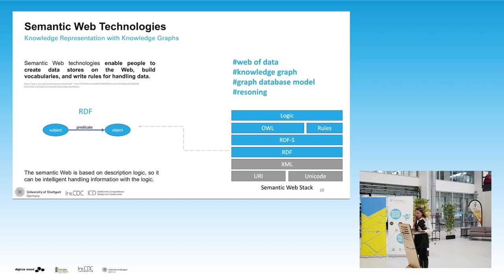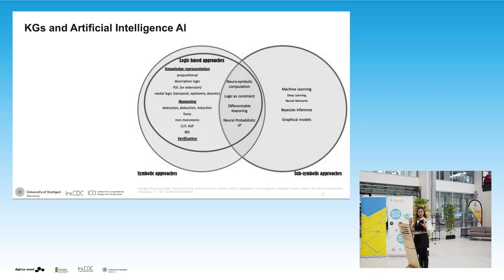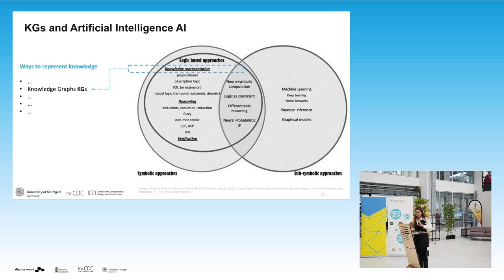If we want to position these technologies and knowledge representation in the overall data science world, there is a chart of artificial intelligence and different approaches. On the left side are the sub-symbolic approaches — well-known ones like machine learning, deep learning, and neural networks. On the right are the symbolic approaches, which are logic-based, including knowledge representation with description logics, reasoning, deduction, and first-order logic. Knowledge graphs are a way to represent knowledge, and knowledge representation is a symbolic approach of AI.